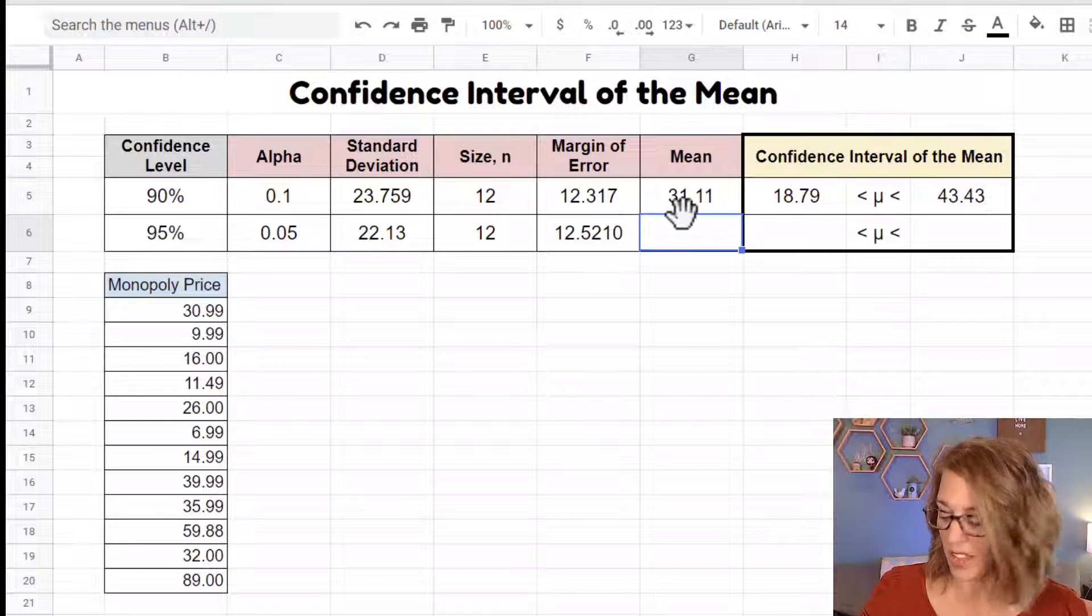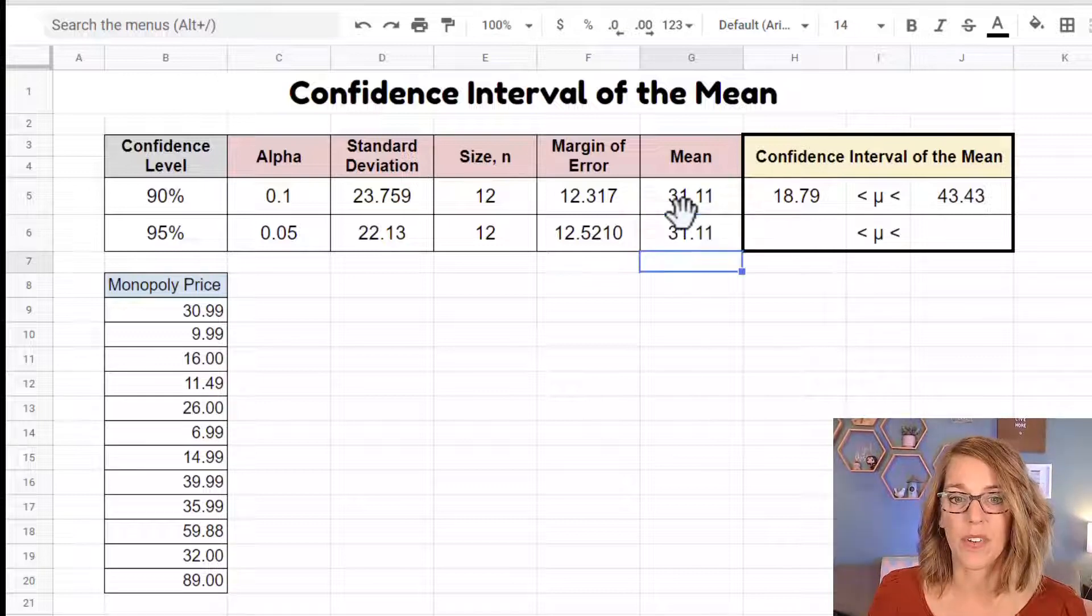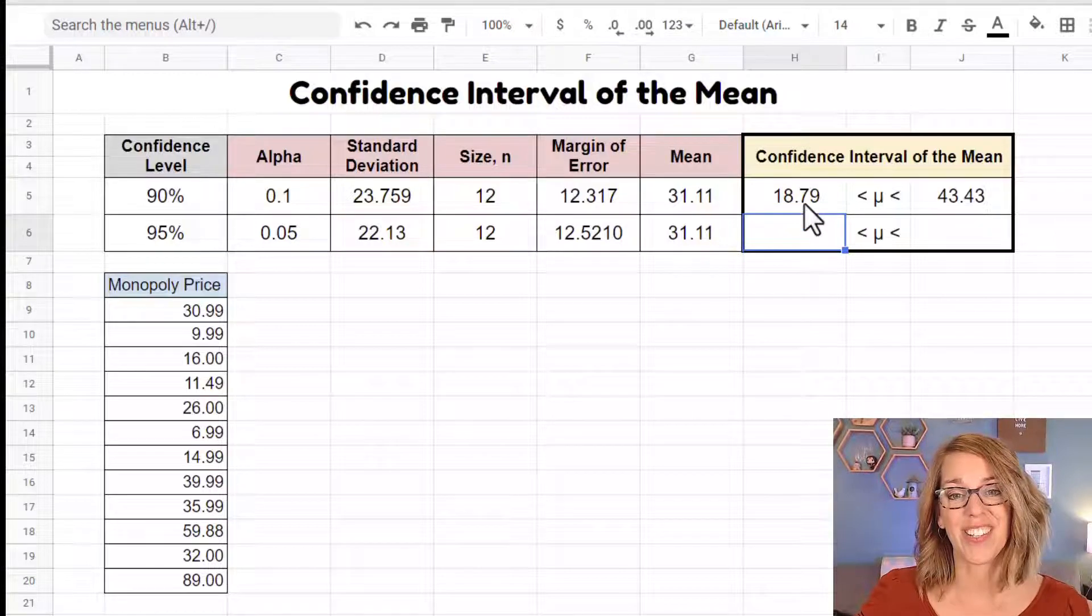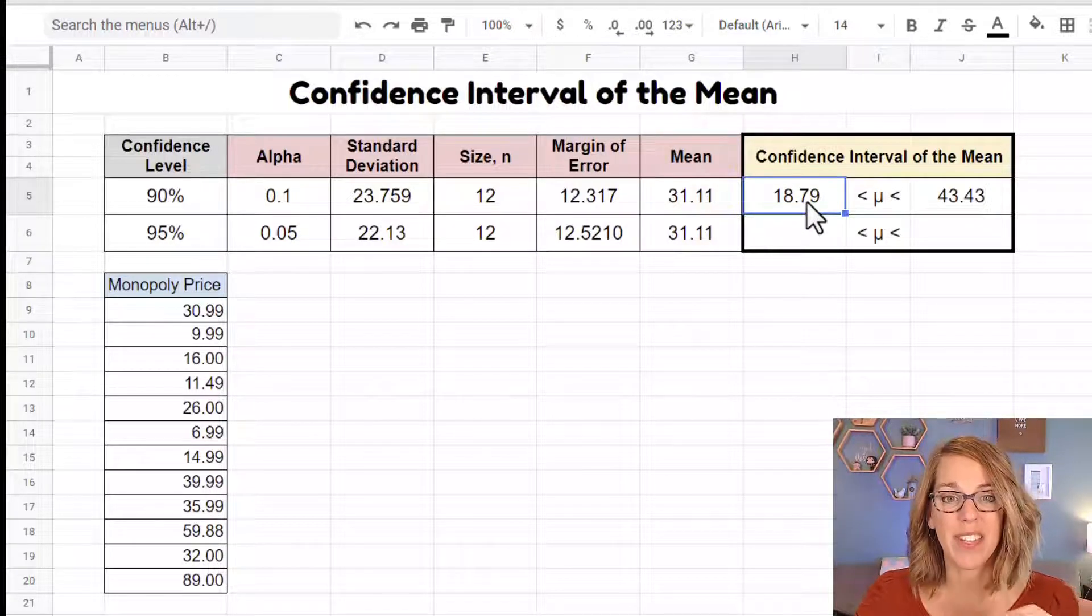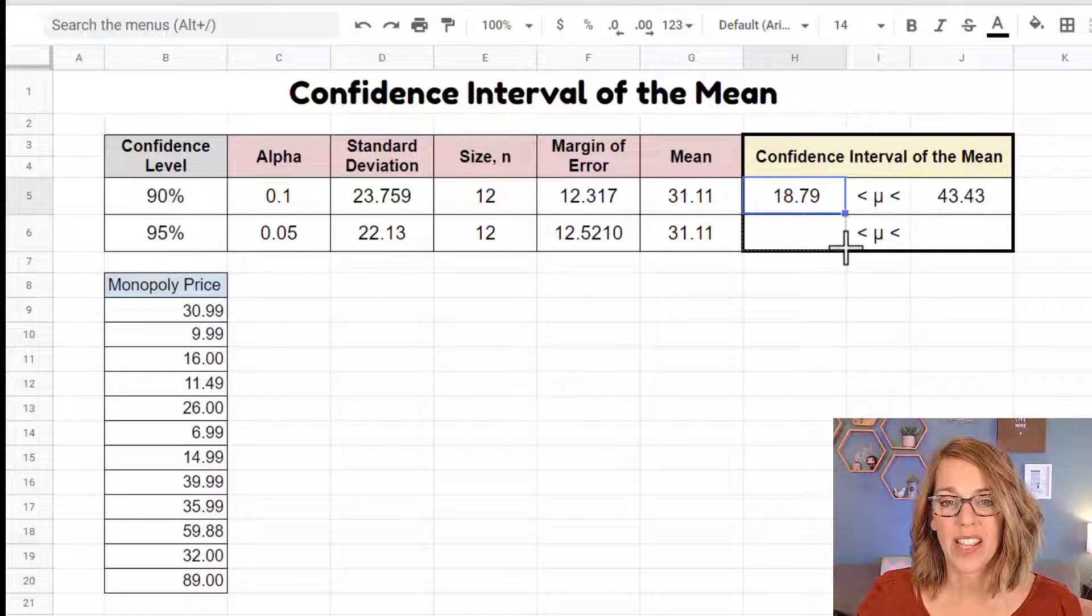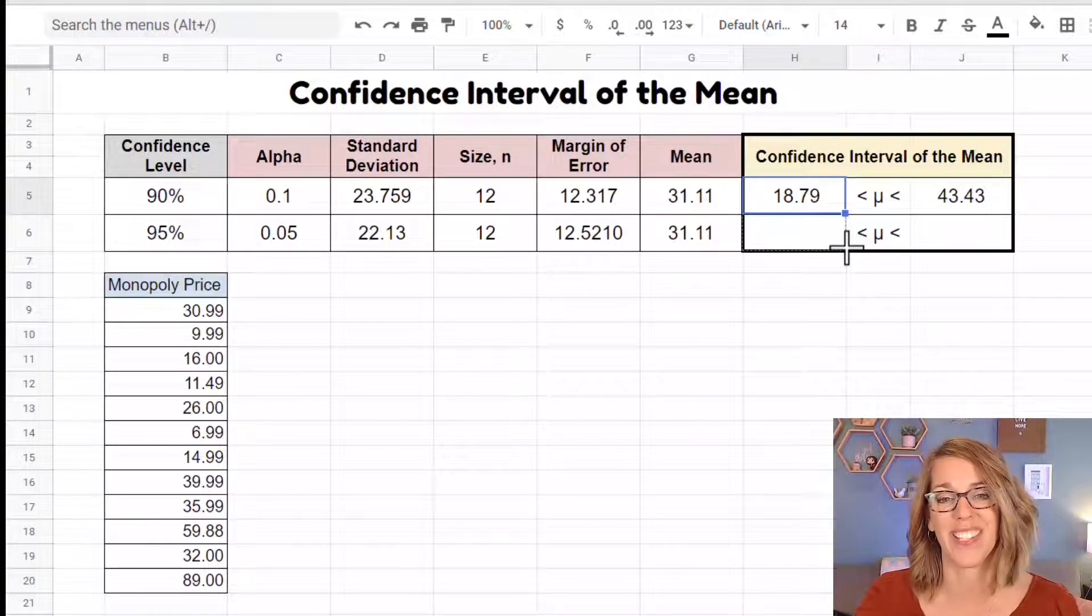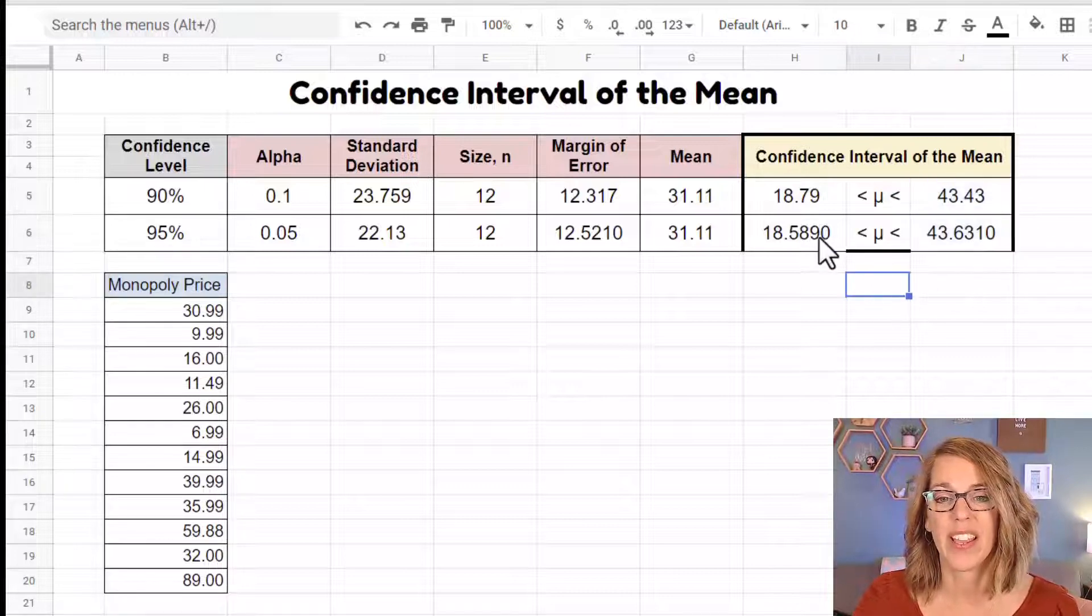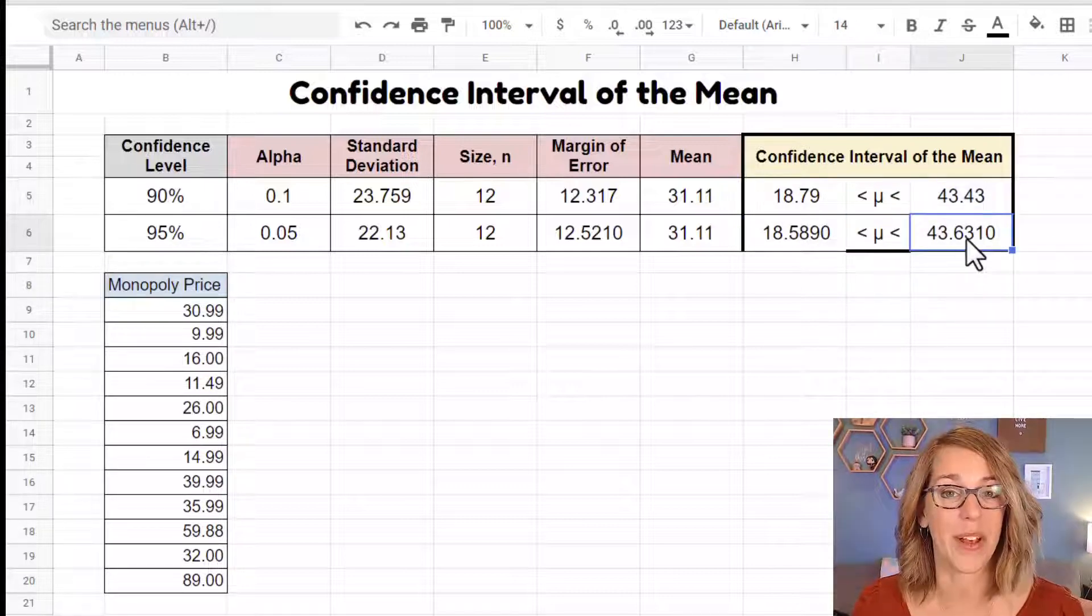I'm going to decrease the number of decimal places I've got there again to three. The mean is the same value. So I can go ahead and just copy this over, 31.11. And I'm going to do the same calculation. So I can actually grab this mean minus margin of error and drag it down into the next cell. I'm clicking on that little blue box in the lower right corner. I'm going to do the same thing for the upper value, click, hold, and drag. And you could of course decrease these decimal places as well.